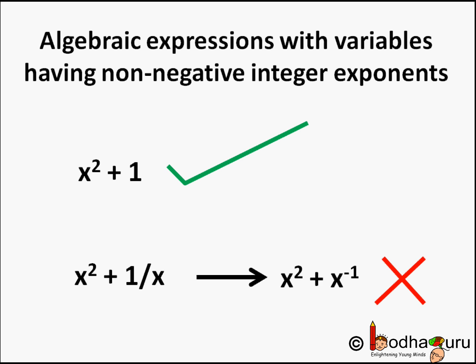x squared plus 1 by x is not a polynomial, because the term 1 by x is equal to x to the power minus 1. Here x has a negative exponent — a negative integer as the exponent. Hence x squared plus 1 by x is not a polynomial. It is an algebraic expression, but not a polynomial.